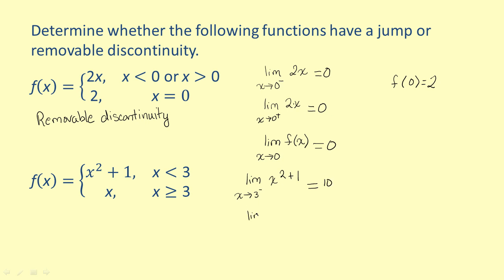Next, find the right hand limit. We have the limit of x as x approaches 3 from the right. Again, we can use substitution, so the limit is equal to 3. Notice that the left and right hand limits are not equal. Therefore, there is a jump discontinuity at x equals 3.